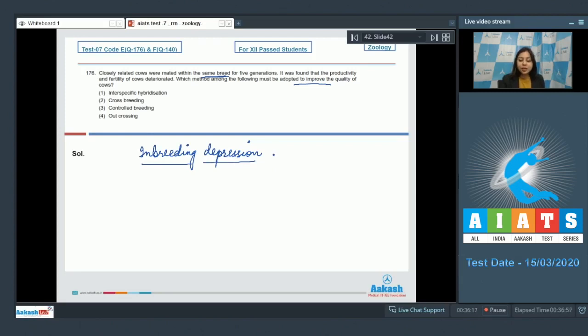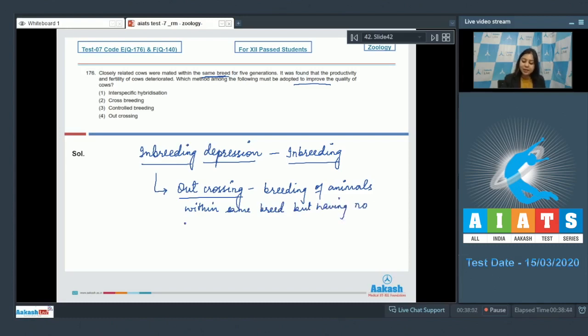characters which occurs due to inbreeding or breeding within the same breed for many generations. This inbreeding depression can be overcome by outcrossing, which involves breeding of animals within the same breed but having no common ancestors on either side for about four to six generations.